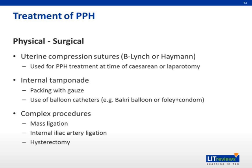The last treatment of PPH involves surgical interventions. Commonly, uterine compression sutures such as B-Lynch sutures or Hayman sutures are used for PPH treatment at the time of caesarean or laparotomy. The second type is internal tamponade — for example, packing with gauze, balloon catheters such as the Bakri balloon, or in low-resource centers, Foley catheters plus condoms as a tamponade within the uterus. Packing with gauze is not used locally as it is related to inflammation and infection. More complex procedures include mass ligation of arteries, internal iliac artery ligation, and hysterectomy, used as a last resort when all other methods have failed.